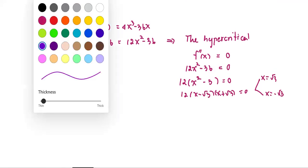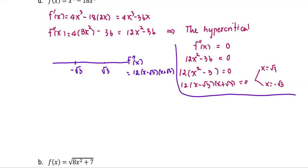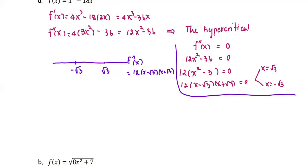We use the real number line and verify the sign of the second derivative. From the factored form of f double prime, we have 12 multiplied by the quantity x minus square root 3 times x plus square root 3. For the interval from square root 3 to infinity, we can use any value greater than square root 3, for example the value 2. If x is greater than square root 3, plugging in 2 gives positive inside, positive inside, so the final product is positive.